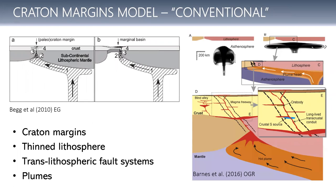The way this has been explained is this sort of classic model on the left, originally put forward by Graham Begg and co-authors in their paper in 2010. Steve Barnes redrew it with a bit more colour in 2016 in his paper on the mineral system approach to nickel sulfide deposits. It's all to do with plume impingement during continent breakup. The plume head gets channelled towards thinner parts of the crust where you get plenty of melting, and then you've got nice trans-lithospheric fault systems through which these magmas can ascend, interact with crustal rocks and form nickel deposits.